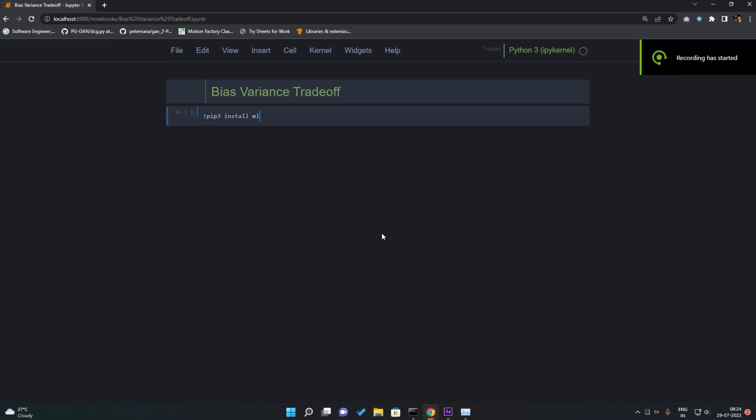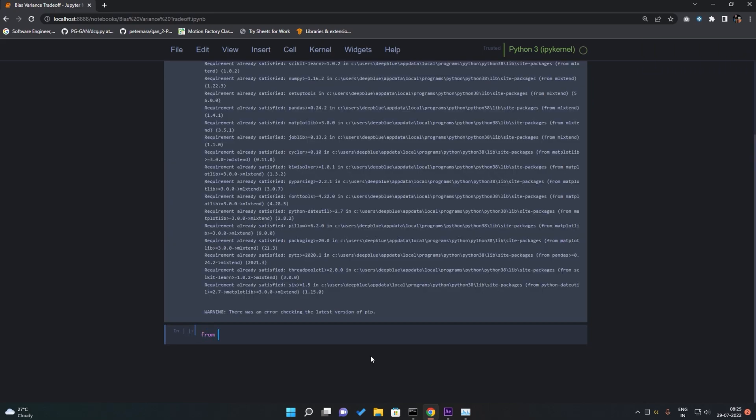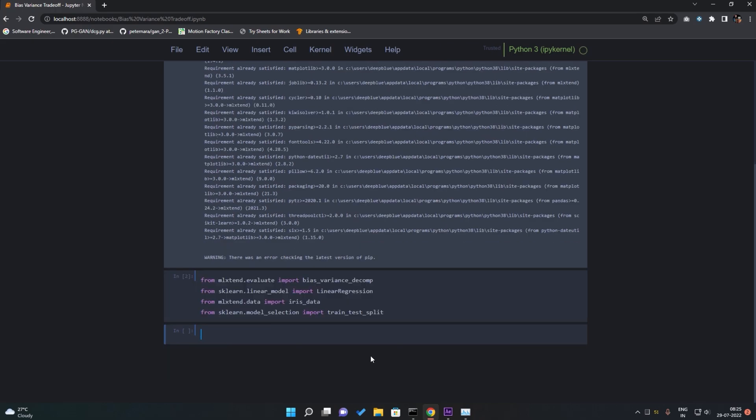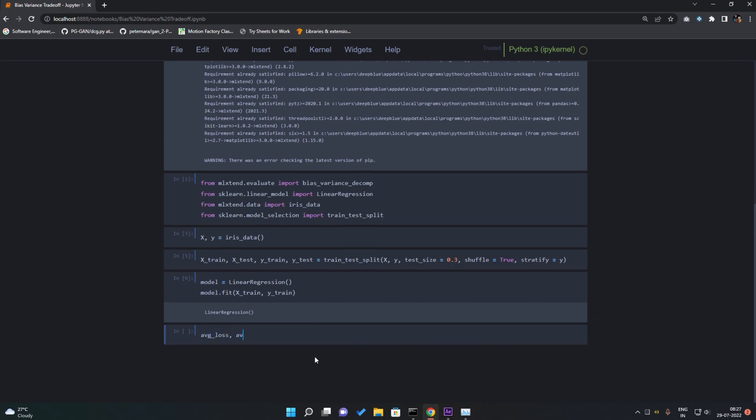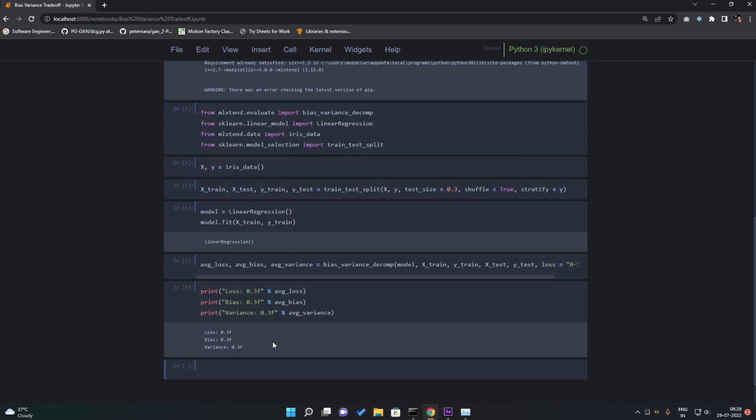Let's see that in code. For this, install ML Extend through pip. Import bias variance decomposition, your favorite classifier or regressor, your dataset, and a function to split the data into training or test set. Load the dataset, split it, and load your model. Now bias variance decomposition will return loss, average bias, and average variance by taking model, training data, and test data as parameters. Print all the results and hit run, and as you can see, the values of your model's bias and variance.